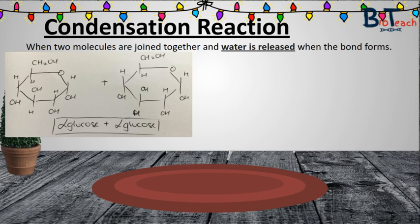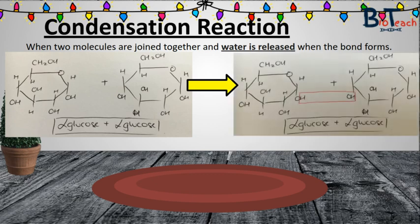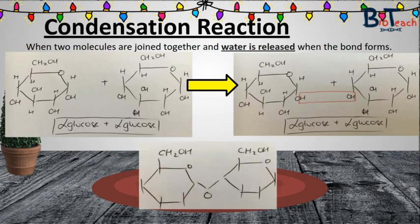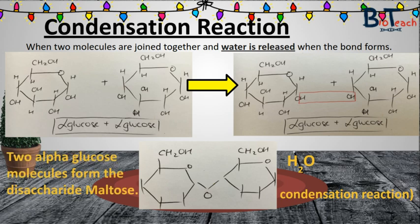Monosaccharide monomers can be joined together by condensation reactions to produce larger molecules such as disaccharides or polysaccharides. As covered in my previous video on monomers and polymers, the condensation reaction releases one molecule of water and requires a net energy input. In this diagram, we know the molecules are alpha because the OH group on the right is shown in the down position. These two alpha molecules form a disaccharide when they react together, with the functional groups reacting to form a water molecule — two hydrogens and an oxygen forming H2O — leaving behind a remaining oxygen, which forms the glycosidic bond. This molecule is known as maltose.